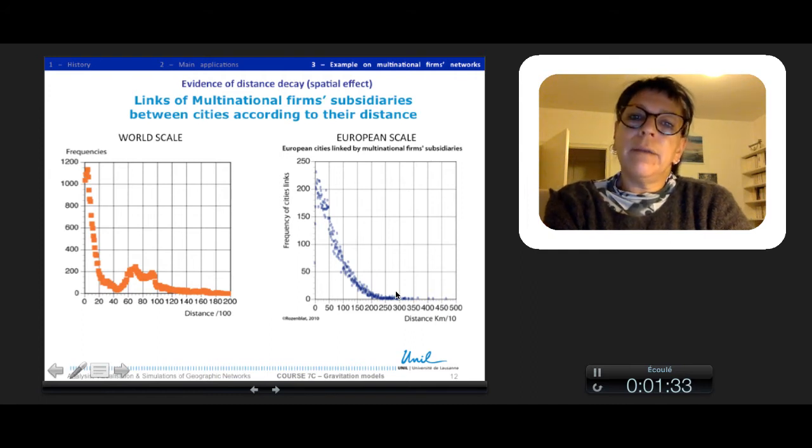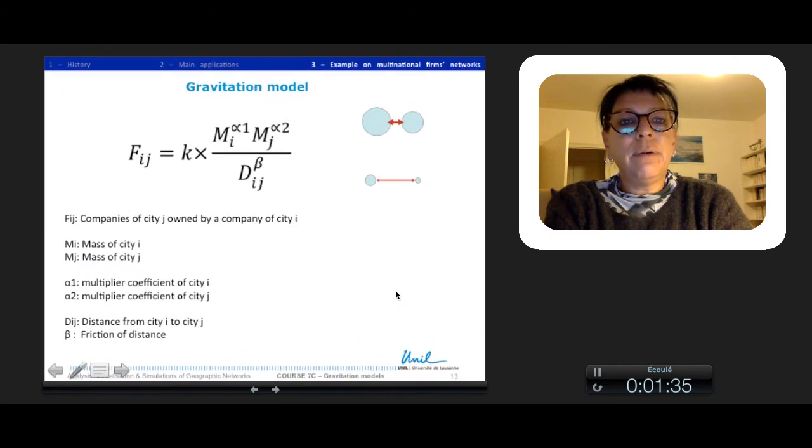So we applied a gravitation model, a very classical one, with F_IJ which has companies of city J owned by a company of city I. It is proportional to a parameter K multiplied by different mass of I and J and divided by a function, a power function of distance, with the multiplier coefficients alpha 1 and 2 and the friction of distance beta.